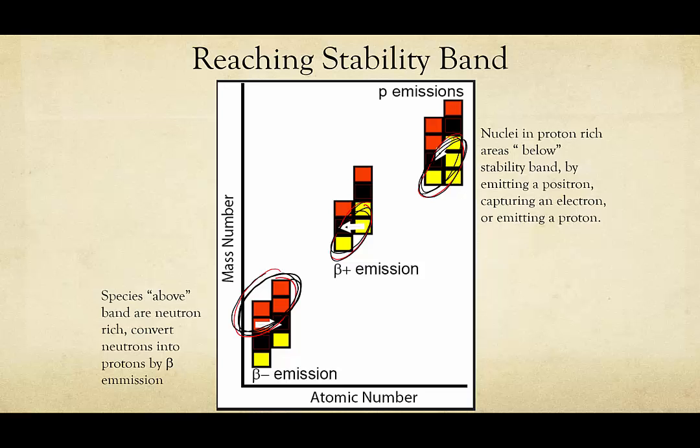Since we won't always have a full chart to zoom in on, and charts are typically quite difficult to read precisely, generally the stable nuclei are reported either by ideal mass-to-proton ratios, ideal neutron-to-proton ratios, or by simply giving you the isotopes of a given proton number that are stable.